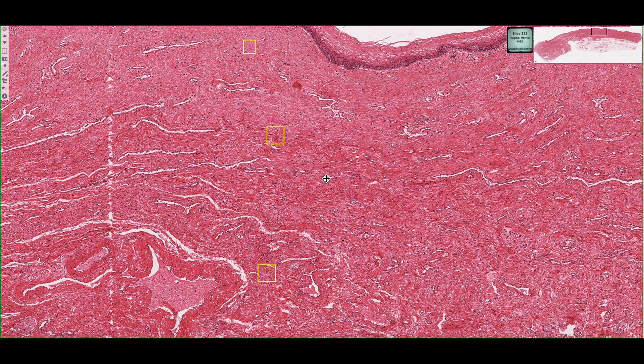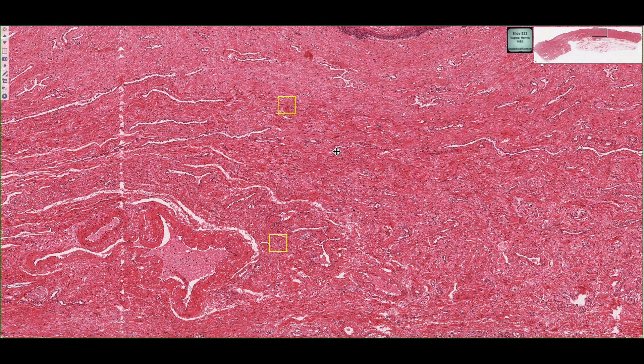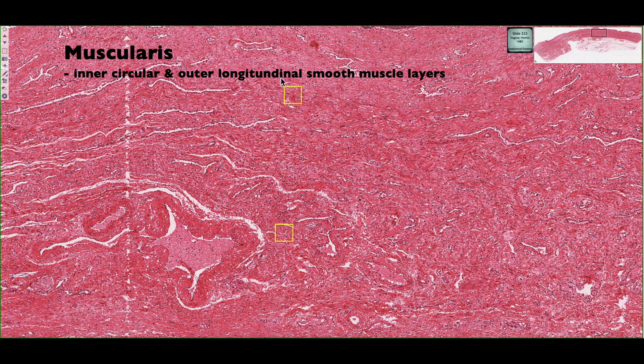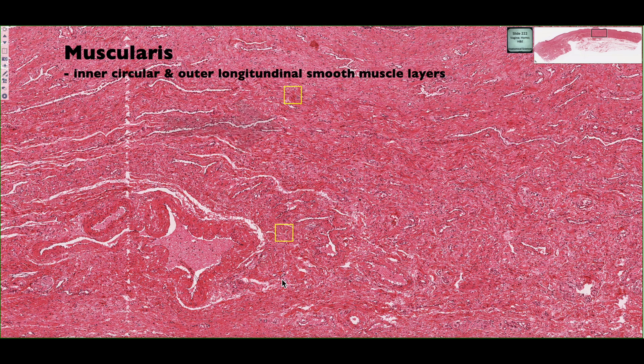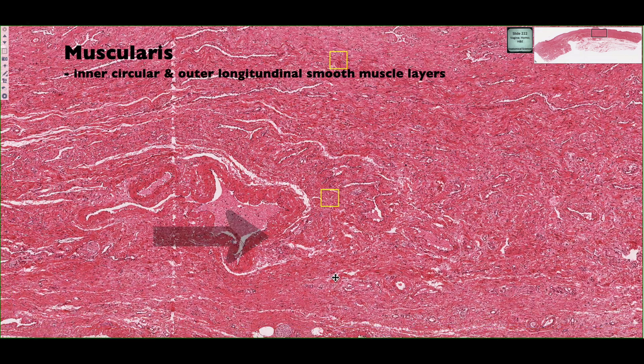Secondly, we have a smooth muscle layer known as the muscularis, and it consists of an inner circular and outer longitudinal muscle layer. And finally, we have the adventitia.